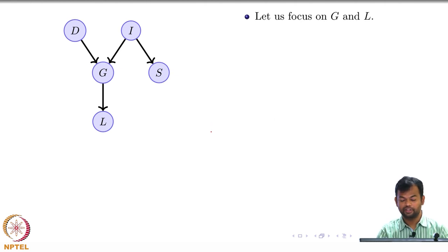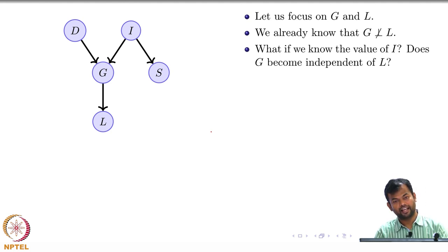Now let us focus on G and L. We already know that G is not independent of L. What if we know the value of I? Does G become independent of L? If I know the value of I? Does G become independent of L?